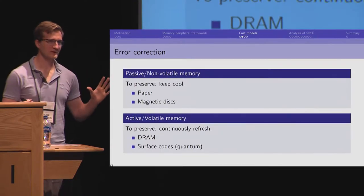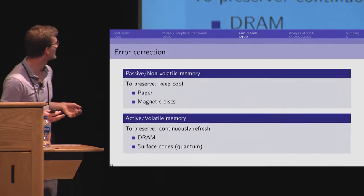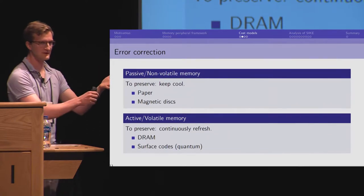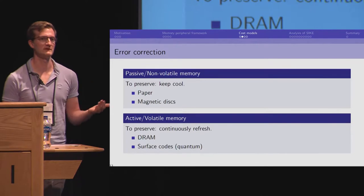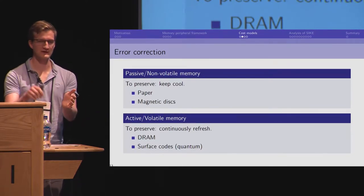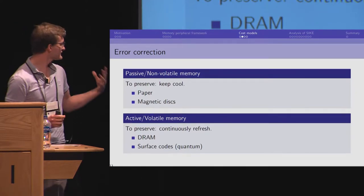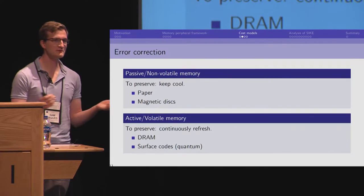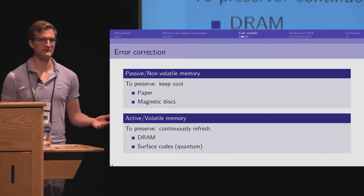Passive error correction is roughly non-volatile memory. So, you can imagine, if you have a piece of paper, you write a bit on it, you keep the paper cool, your bit will last for a really long time. Similarly, if you have a magnetic disk, you can write a bit to it and just keep the disk cool and you're fine. Active memory needs to be continuously refreshed to preserve it. DRAM should be a very familiar example. And quantum surface codes are another example.